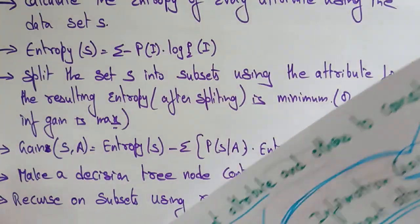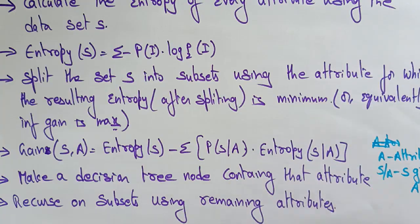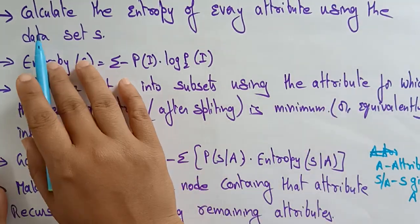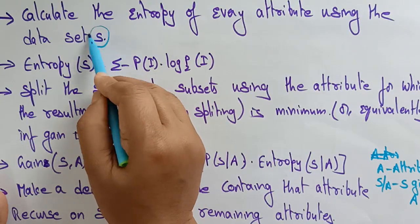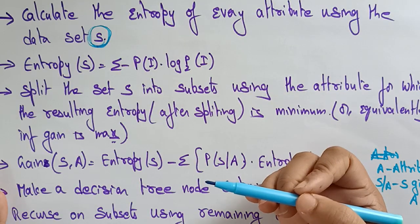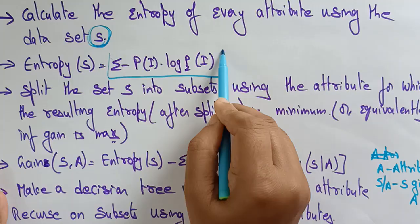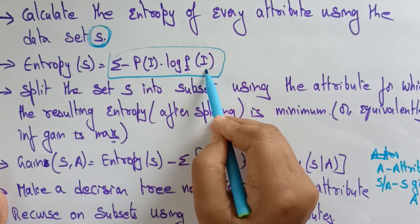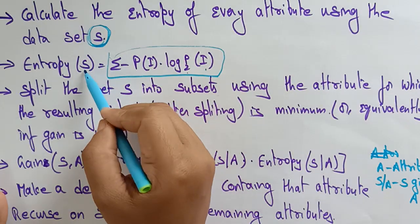The procedure continues until reaching a decision for that branch. Now let's see the formulas. Calculate the entropy for every attribute using the data set S. The entropy formula is: Entropy = Σ −p(i) · log₂(p(i)). Split the set S into subsets using the attribute for which the resulting entropy after splitting is minimum.